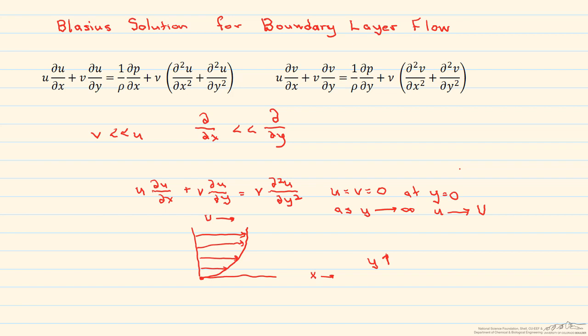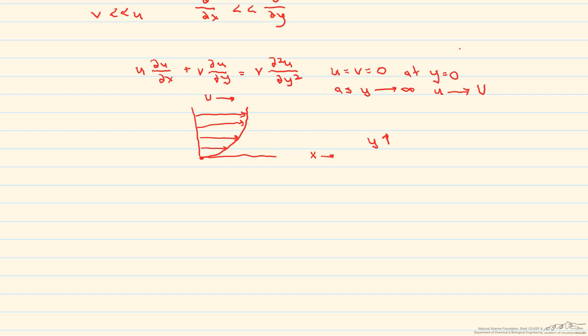This boundary layer equation is a non-linear partial differential equation, but by applying a coordinate transformation and change of variables, the Blasius solution reduces the PDEs to ordinary differential equations.